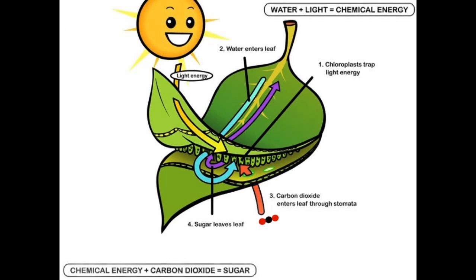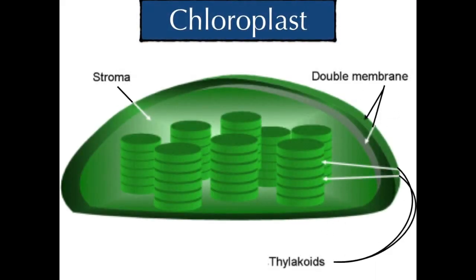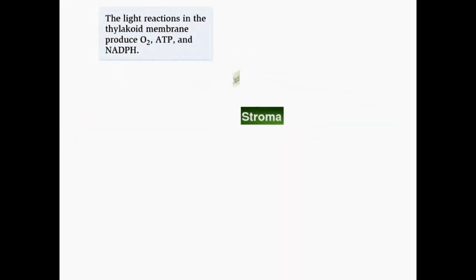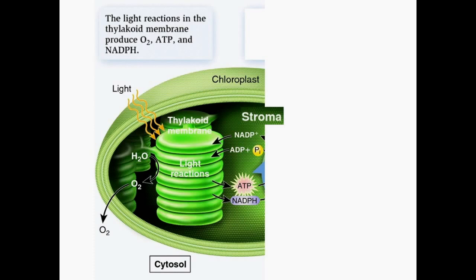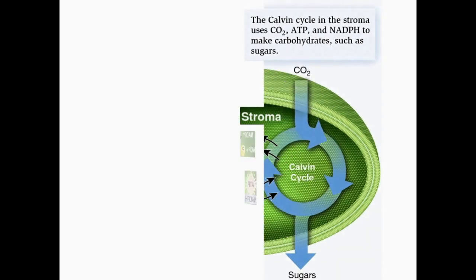The chloroplast itself is a double-membraned organelle containing stroma-bound thylakoids. The thylakoids convert trapped light into chemical energy contained in NADPH and ATP, the two molecules used in the second stage of photosynthesis, the Calvin cycle. This cycle occurs in the stroma of chloroplasts. Carbon dioxide is captured by the chemical ribulose biphosphate. Six molecules of carbon dioxide enter the Calvin cycle, eventually producing one molecule of glucose.